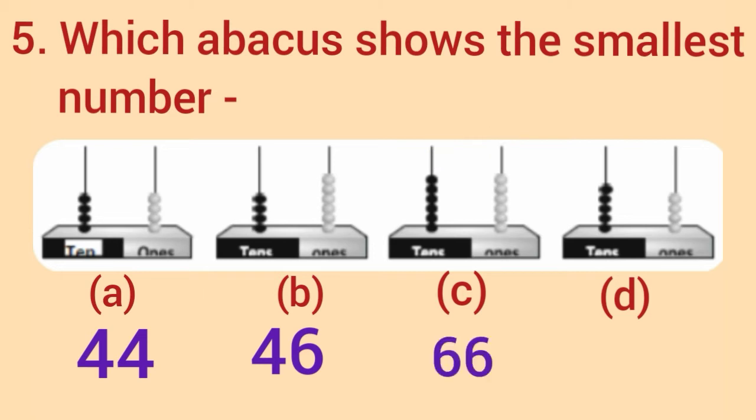Now, see Abacus D. How many beads are there in one's rod? Yes, 4 beads. And, in 10's rod, there are 5 beads. So, it shows the number 54.